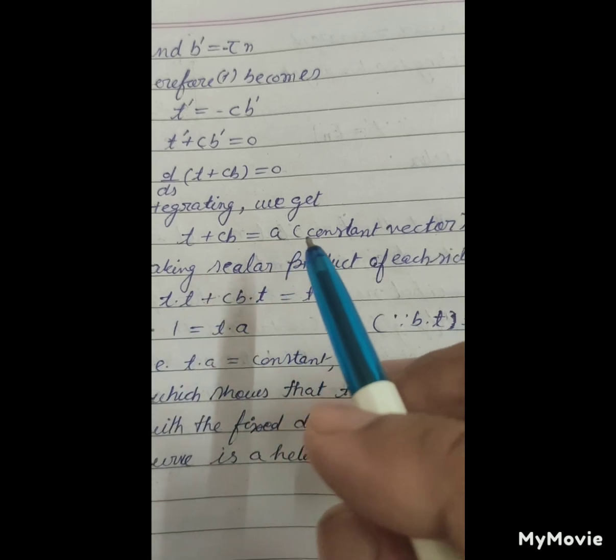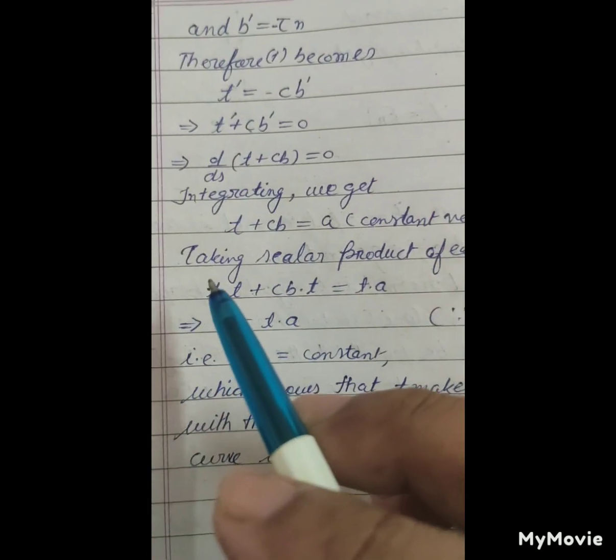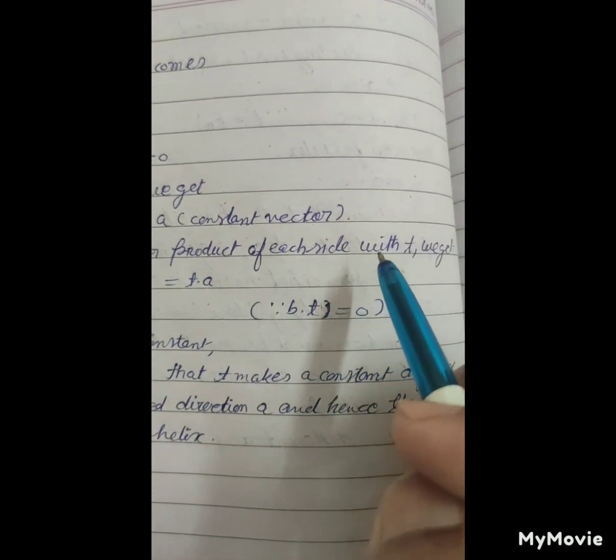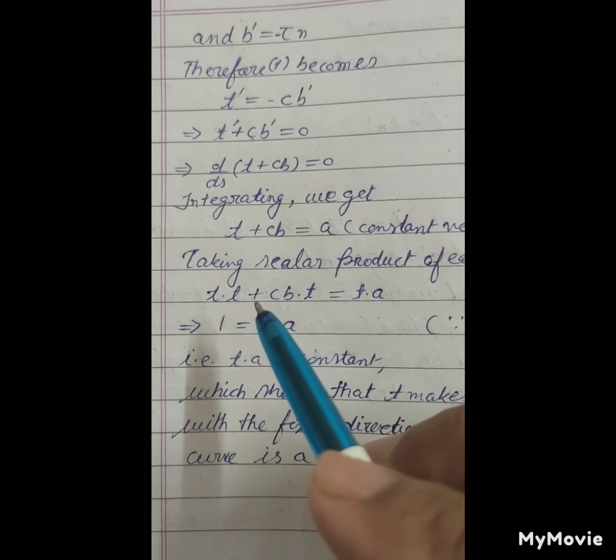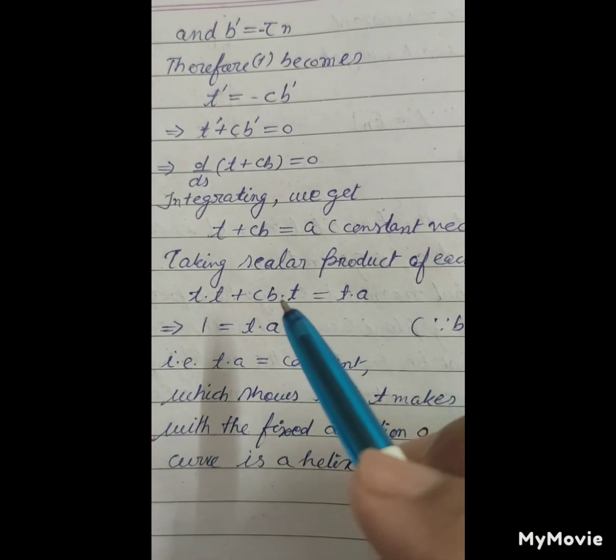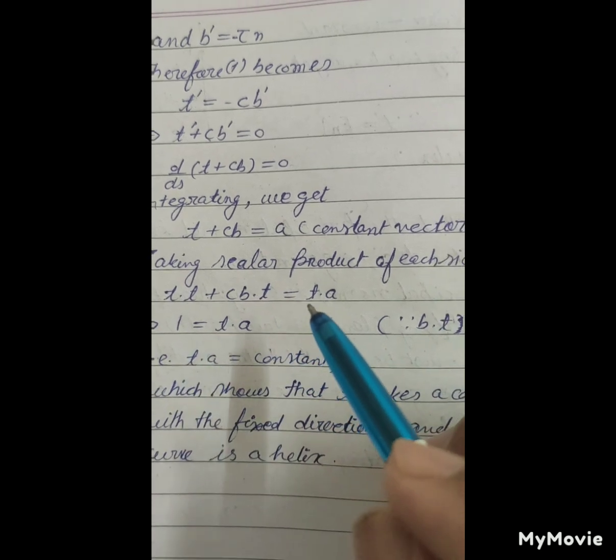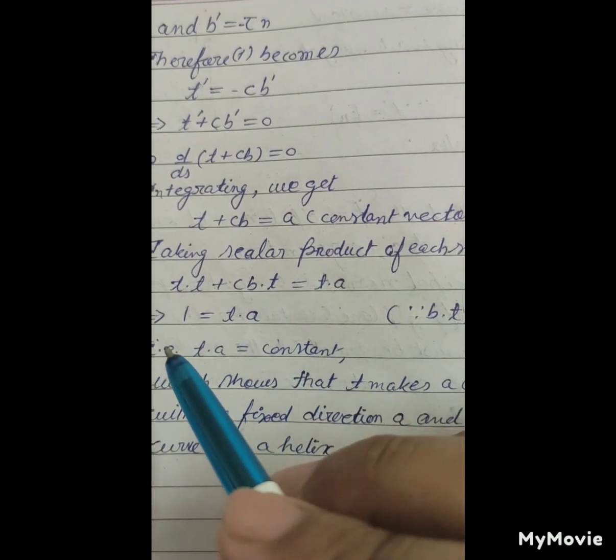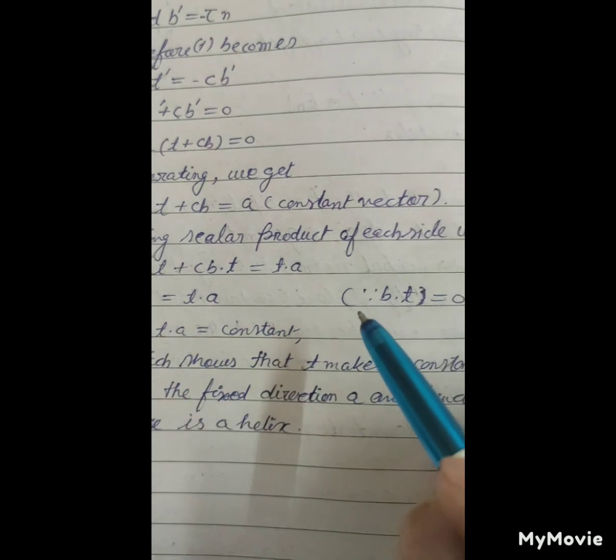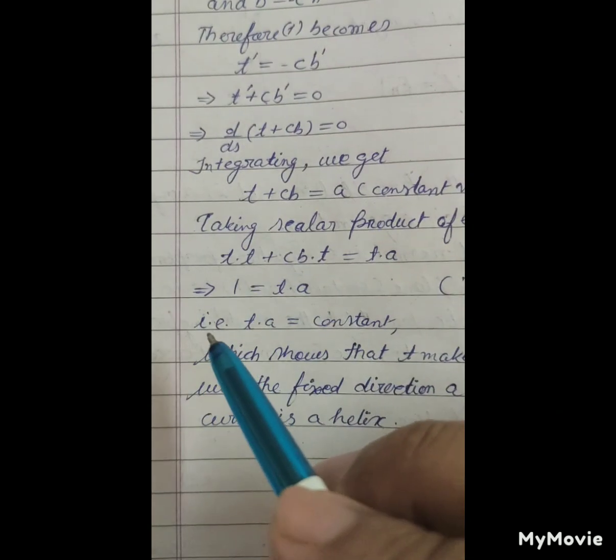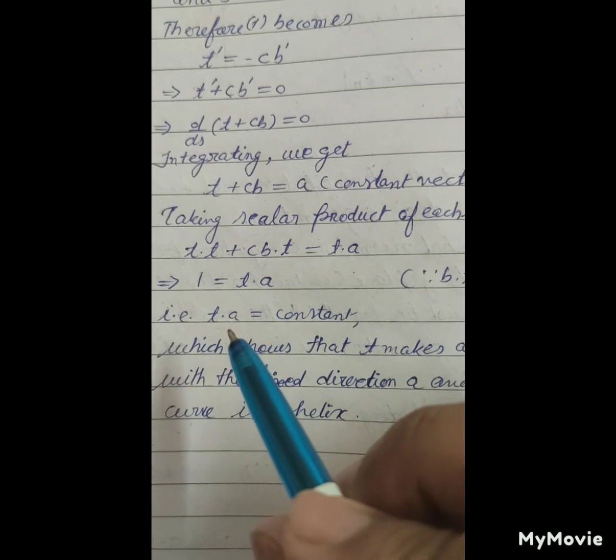Integrating, we get t plus cb equals a constant vector A. Taking scalar product of each side with t, we get t dot t plus cb dot t equals t dot A, which implies 1 equals t dot A, because b dot t equals 0.